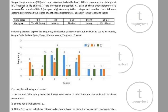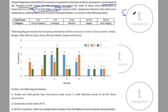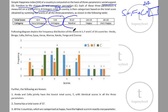The Simple Happiness Index of a country is computed based on three parameters: Social Support (S), Freedom of life choices (F), and Corruption perception (C). Each parameter is measured on a scale of zero to eight — integers only, so values like 0.5 or 3.8 are not allowed. A country is categorized based on the total score obtained by summing all three parameters, giving a maximum total score of 24.